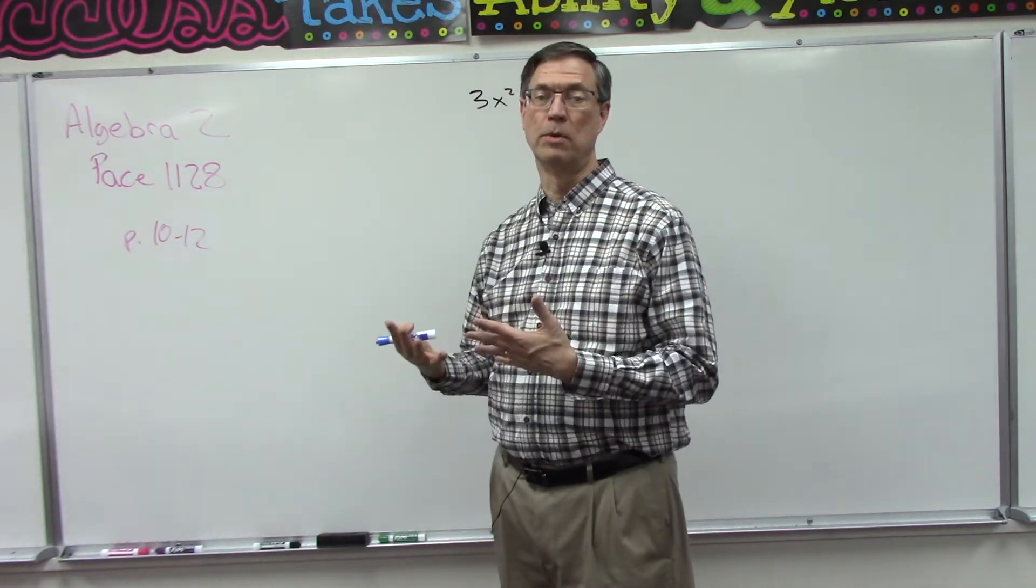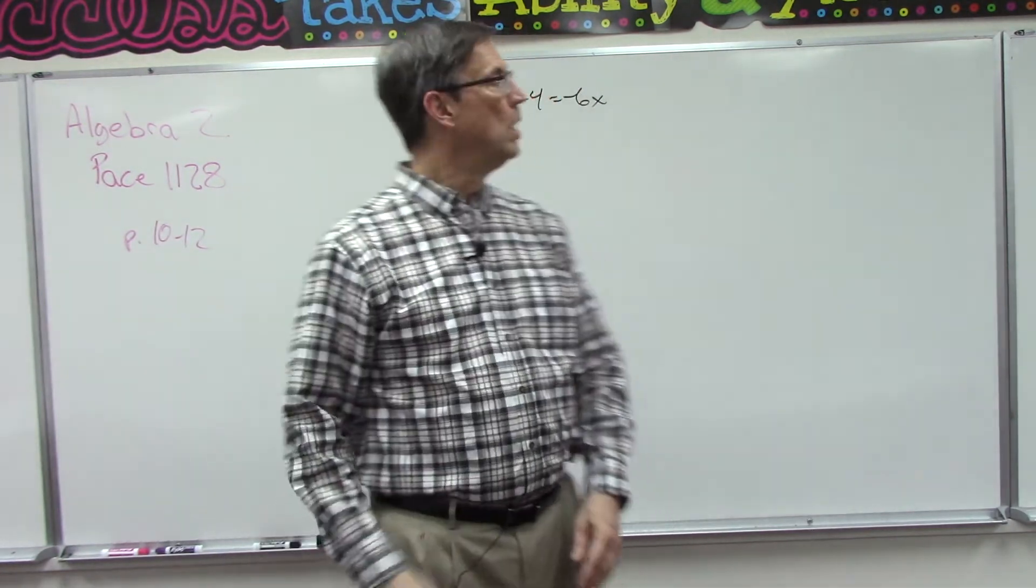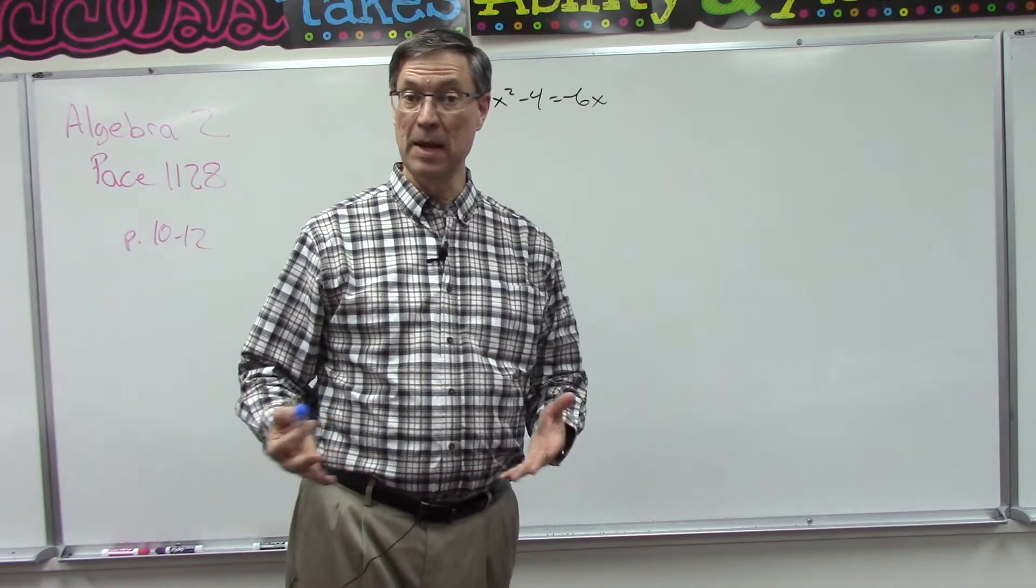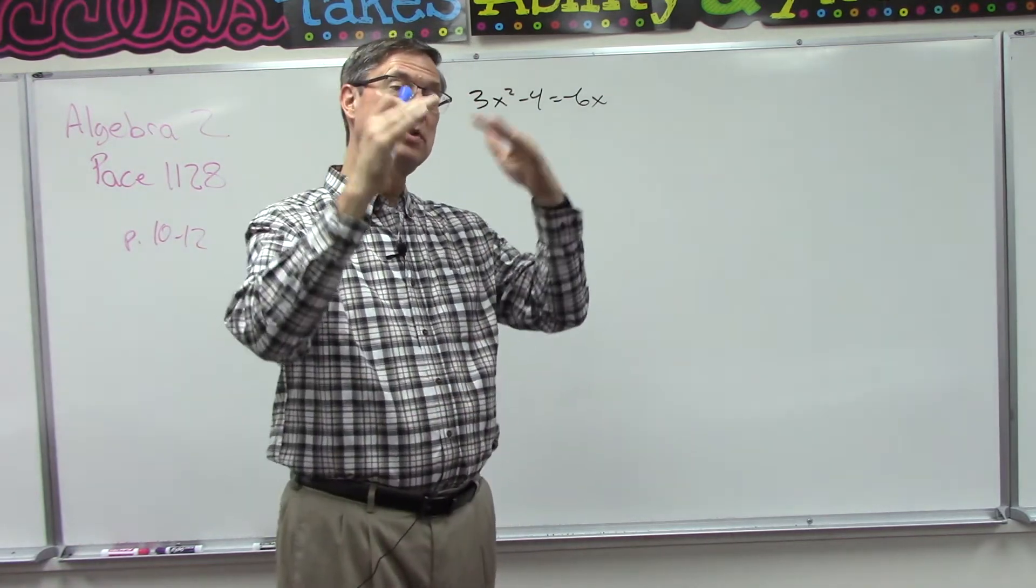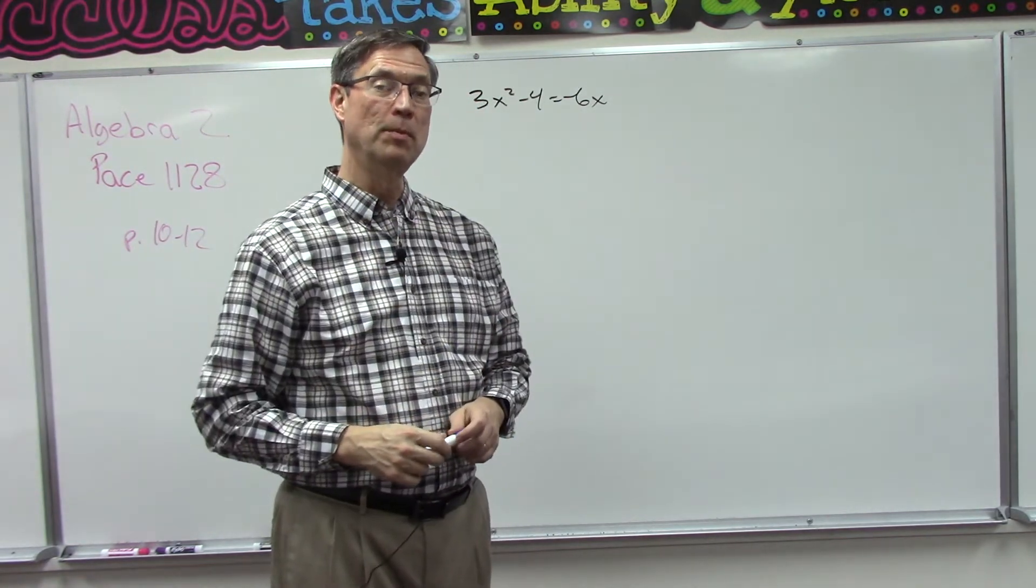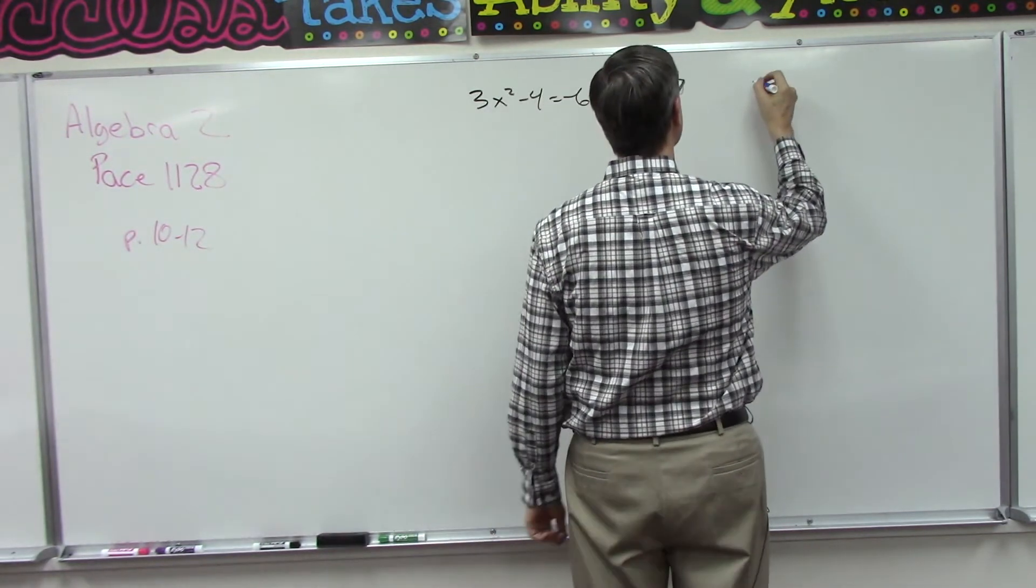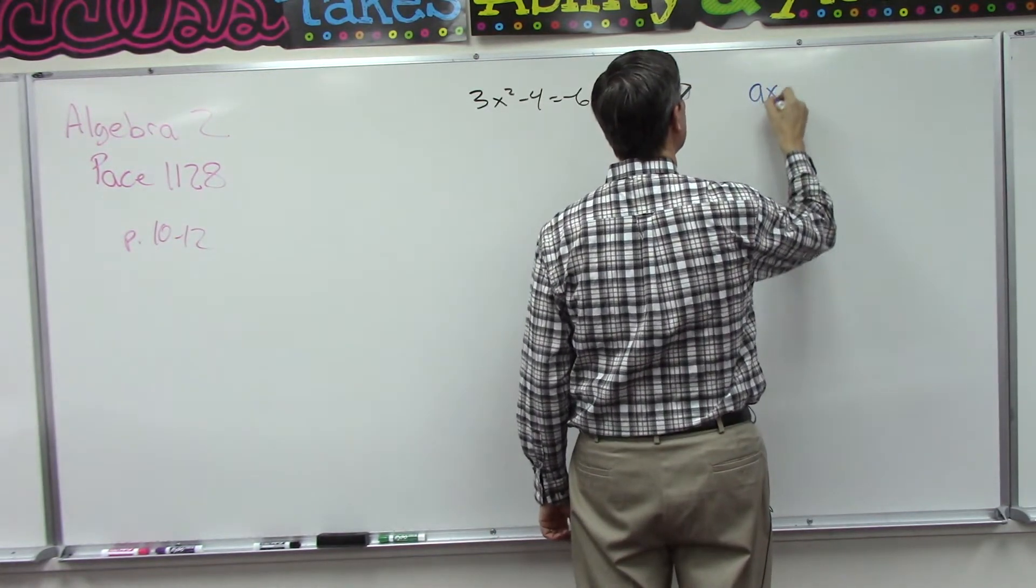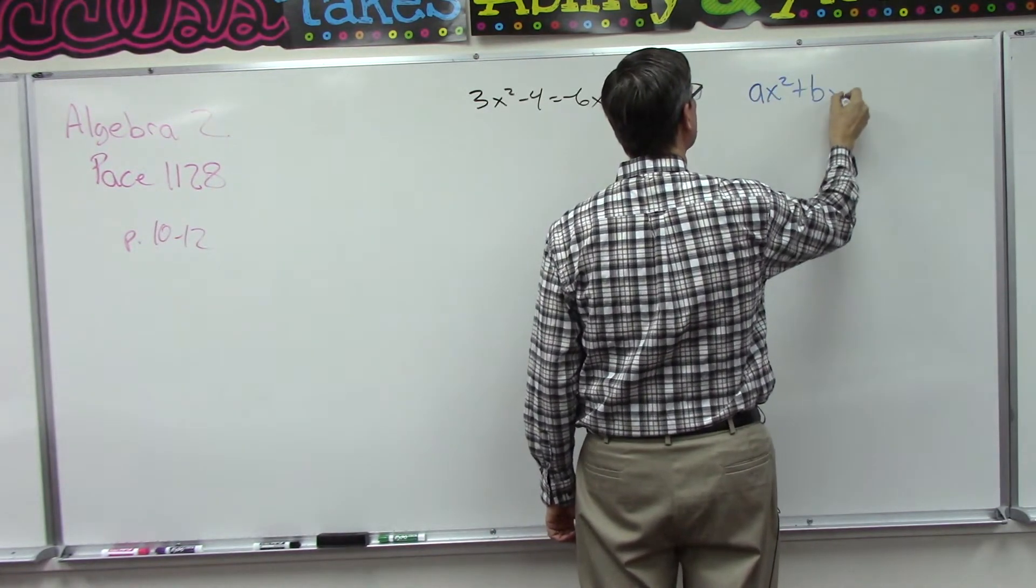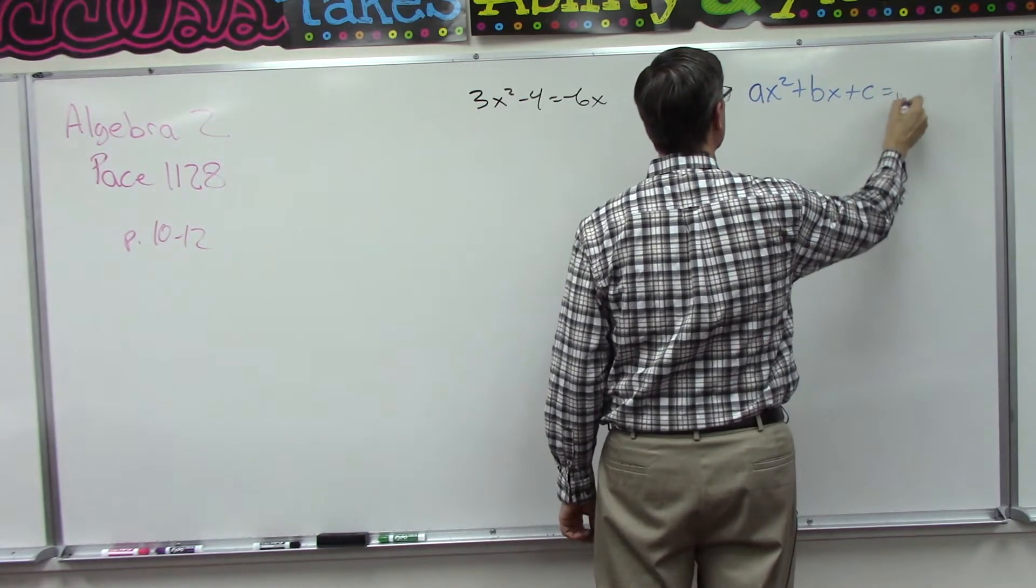Quadratic means you have an x squared term, right? So the formula on page 10 shows how they derive this formula using an equation that's in this form: ax squared plus bx plus c equals zero.